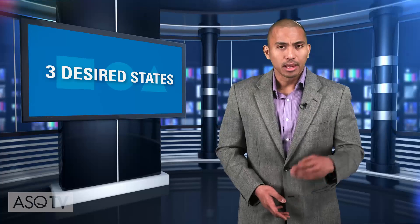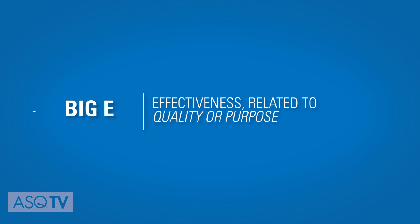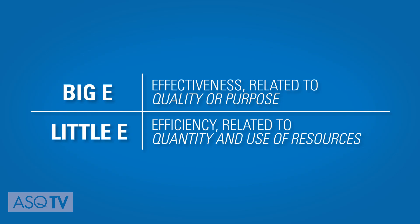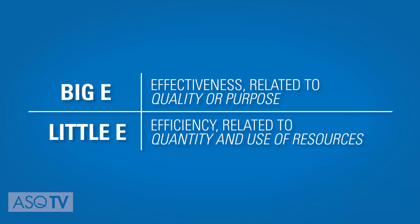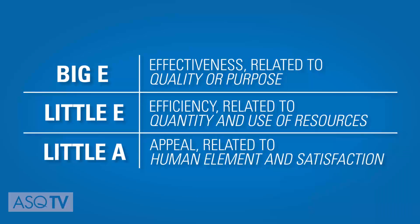Adams describes three areas you always want to measure — in other words, the three desired states people want. He says: 'In my world I keep it simple and there are three. I call them big E, little e, little a.' Going over those: big E — effectiveness — is related to quality and purpose; little e is related to quantity or use of resources; and little a is related to the human element, or the satisfaction of the human spirit.